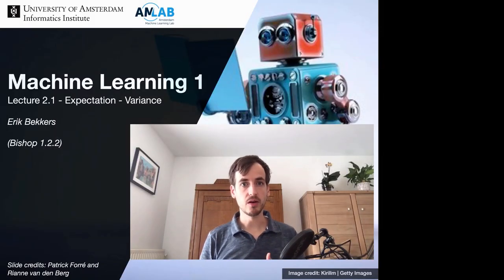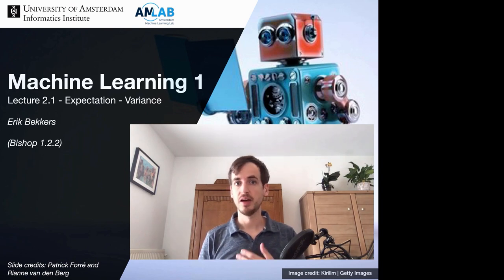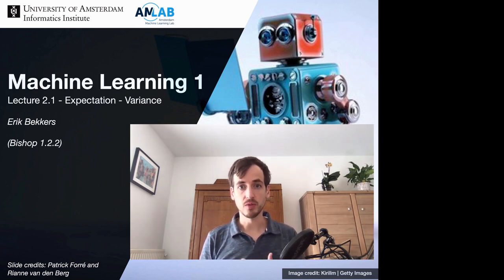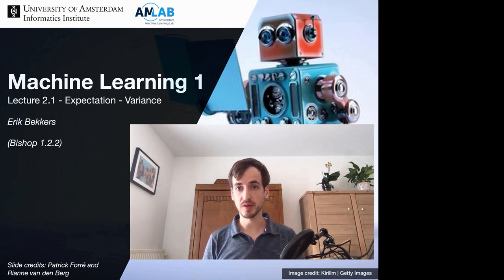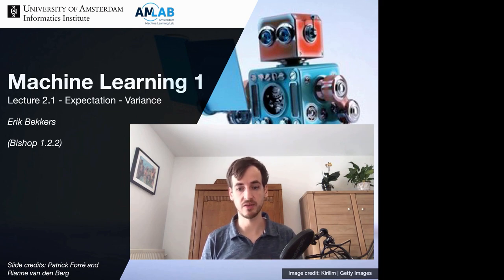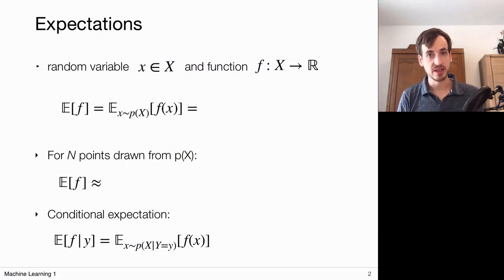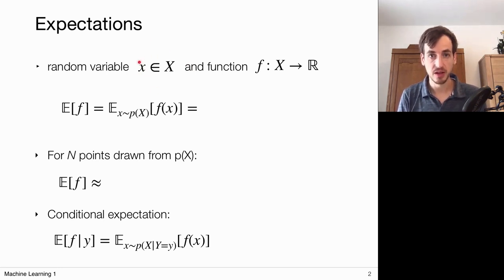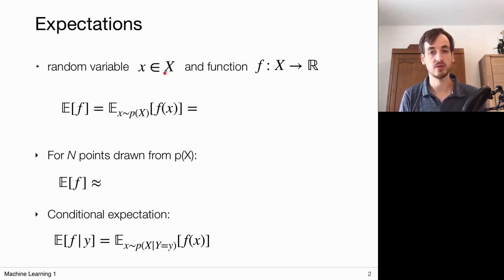In this video I will continue going over some of the core definitions in probability theory. Specifically I will define the expected value, variance, and covariance. Then I will go over one of the most widely used probability distributions — the Gaussian distribution. This is a parametric probability distribution which we will encounter throughout this course, so it will definitely pay off to pay attention. Let's start with the expectation.